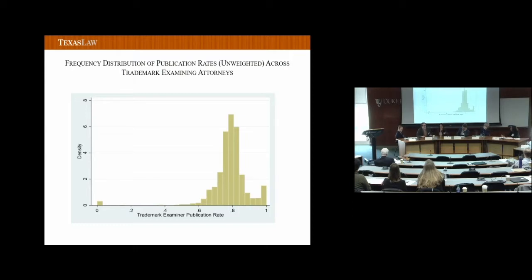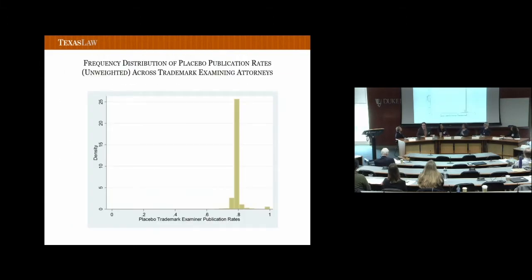One reaction might be that there's always going to be some degree of variation when comparing outcomes across people — maybe everyone has the same proclivity to publish and variation is just statistical noise. We try to rule that out. We do a formal test, and also graphically demonstrate this is real variation and not random variation. We take each application and randomly assign a placebo outcome designed to occur about 78% of the time on average, then figure out each attorney's placebo publication rate. That distribution is very tightly centered around 78%, whereas the real data shows far more variability relative to what we would see by chance alone.